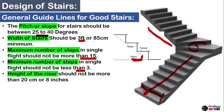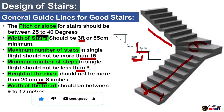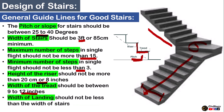The height of the riser should not be more than 25 centimeters or 8 inches. The vertical portion of the step is called the riser and the horizontal portion is called the tread. The width of the tread should be between 9 to 12 inches. The width of the landing should not be less than the width of the stair. Winders — triangular-shaped steps — should be avoided as much as possible.